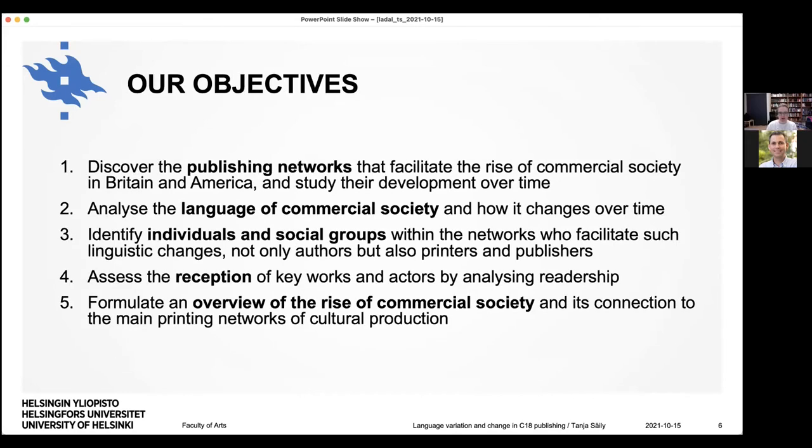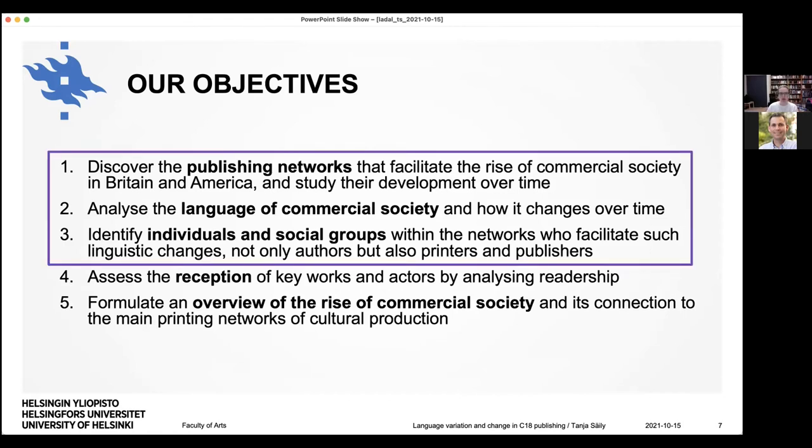So our objectives are as follows. We want to discover the publishing networks that facilitate the rise of commercial society in Britain and America and study their development over time. We want to analyze the language of commercial society and how it changes over time. And we want to identify individuals and social groups within the networks who facilitate such linguistic changes. And these are not necessarily only authors now, but they can also be printers and publishers in the network. And then we also want to assess the reception of key works and actors by analyzing readership. And finally, kind of formulate an overview of the rise of commercial society and its connection to the main printing networks of cultural production. So I'm going to be focusing on these first three objectives today and I'll talk about them a bit more later.